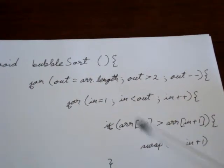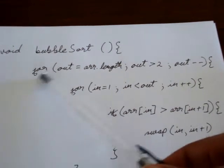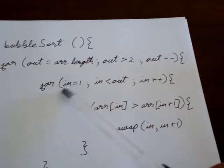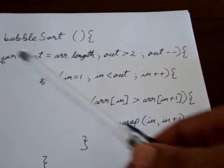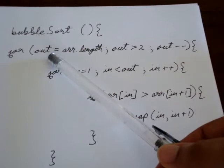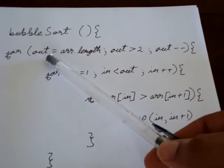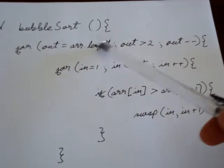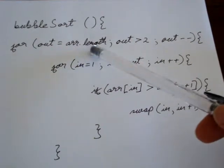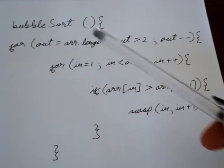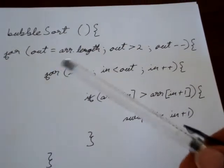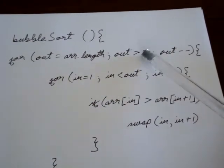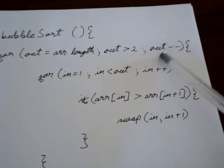As we see, we have an outer loop just as we had before. The outer loop has a value out as we had in our manual movements. The out is set to the length of the array - remember out was set to the right side of the array, so array.length sets the out value to that. We go while out is greater than two, and we are moving out to the left, so thus we have out minus minus.